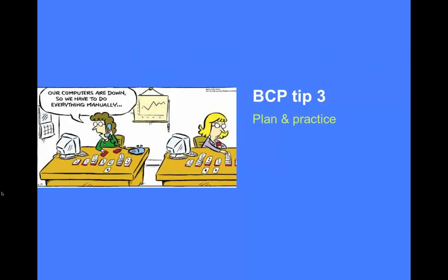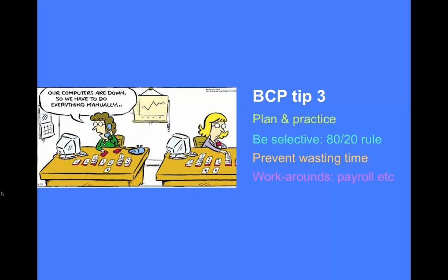Tip 3: Plan and practice, and be selective — use the 80-20 rule. Don't try to cover every single thing that could be affected; instead look at what is time-critical in terms of business processes and the resources required. Manual workarounds sound nice but require testing and planning. Most businesses think they're cheap or free, but they require significant maintenance. Younger or newer staff may not even know the old way things were done, so you need to keep them trained in those manual workarounds.